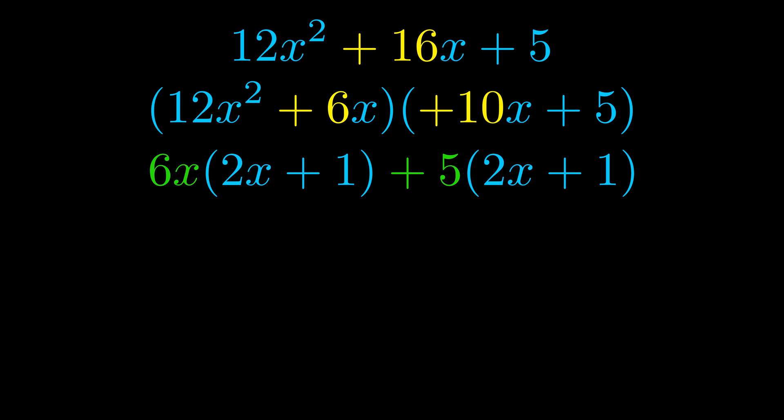Notice also how what remains inside of the parentheses is the same in both cases. The blue values are the same. Those blue values will become one of our factors and we will combine the two green values, the GCFs that we pulled out, to get the other one. And that is our fully factored equation.